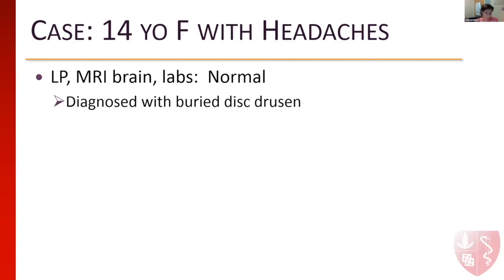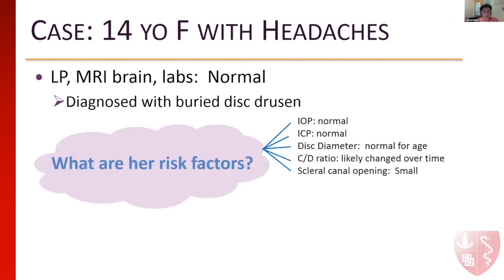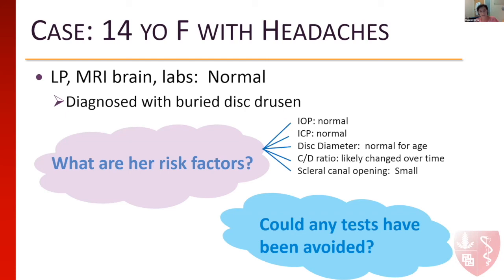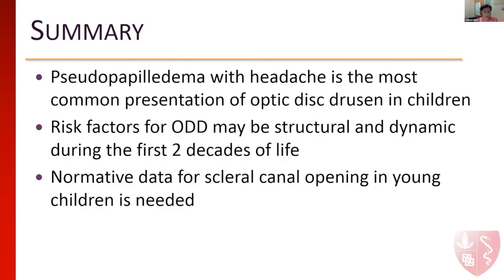Back to our case: this child went on for a lumbar puncture, brain MRI, and labs, all of which were normal. She was given a diagnosis of buried drusen. Her only identified risk factor was a smaller scleral canal opening; her ICP, IOP, and disc measurements were all normal. Could any of these tests have been avoided? In summary: pseudopapilledema comes with headaches as the most common presentation in childhood. Risk factors may be structural but are dynamic during the first two decades of life. There is no normative data for scleral canal opening before age 11, and earlier data is lacking because OCT did not exist when the original post-mortem studies were conducted.